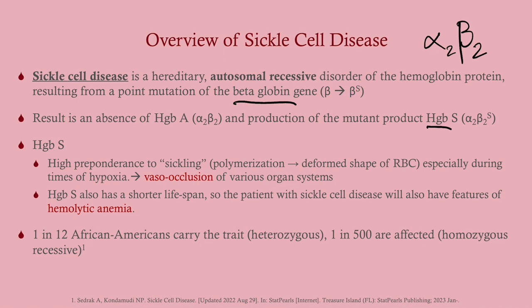Hemoglobin S causes problems because it has a high propensity to sickle, especially in low oxygen conditions. You get polymerization of this abnormal hemoglobin, which deforms the shape of the red blood cell, and that deformed cell can cause vaso-occlusion. This can happen in the lungs, abdomen, penis, eyes, and elsewhere. Hemoglobin S also has a shorter lifespan, which is why it causes hemolytic anemia. So the two main issues are vaso-occlusion and hemolytic anemia.